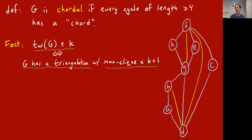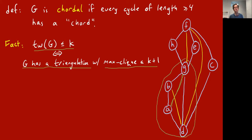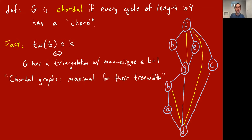We triangulated in a smart way. If we had added that extra edge to eliminate another cycle, we would have had a K4 down here — a complete four-vertex graph — but we can get away without doing that. In some sense, chordal graphs are maximal with respect to adding edges for their tree width: if you have a chordal graph with tree width t, adding further edges increases its tree width.